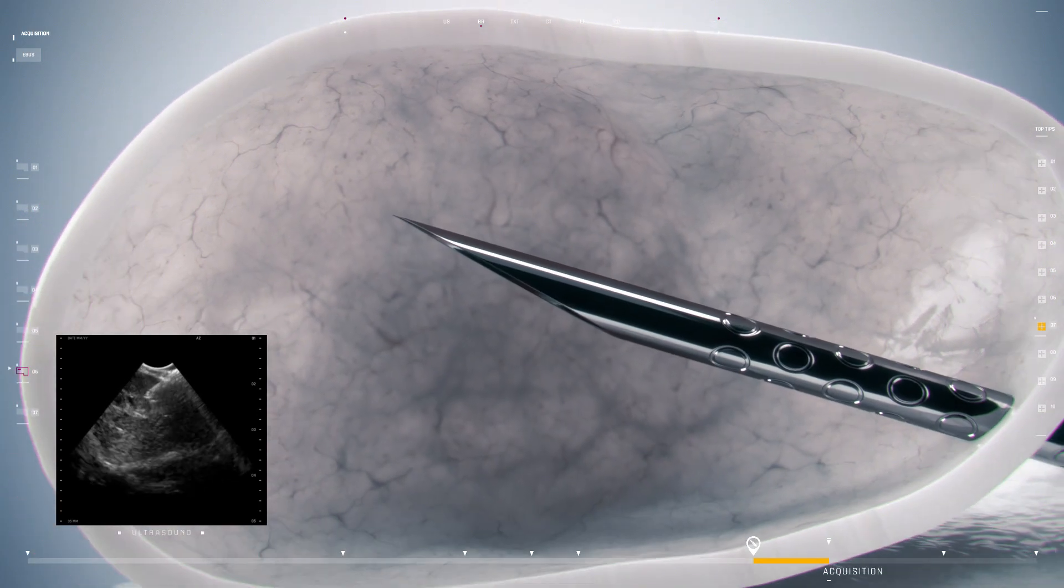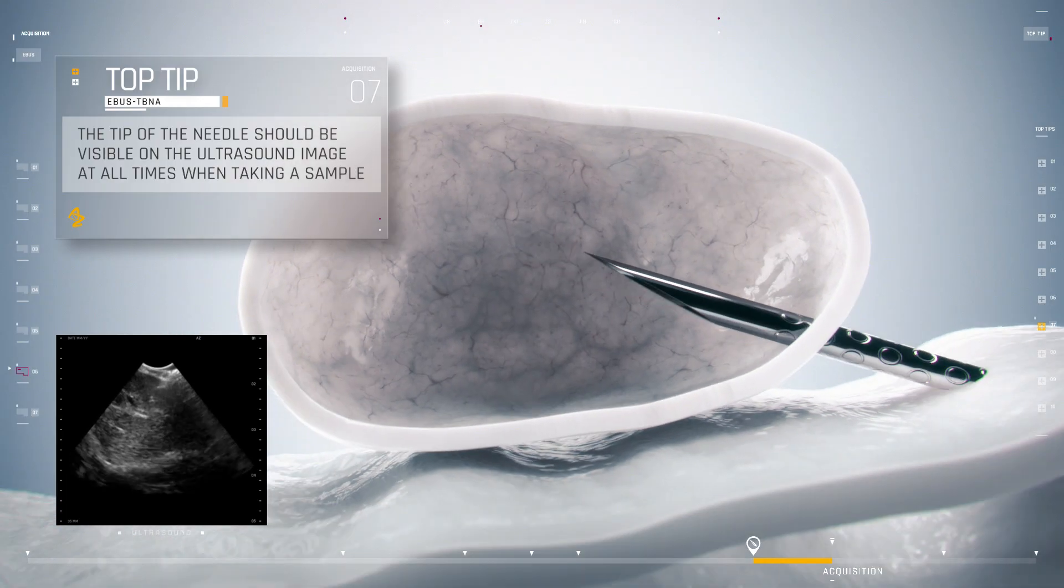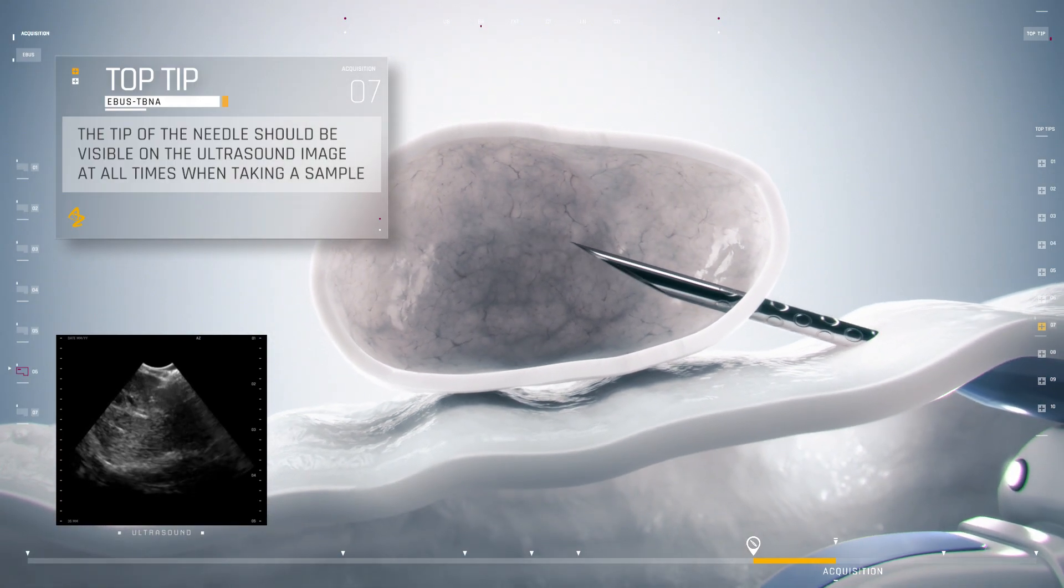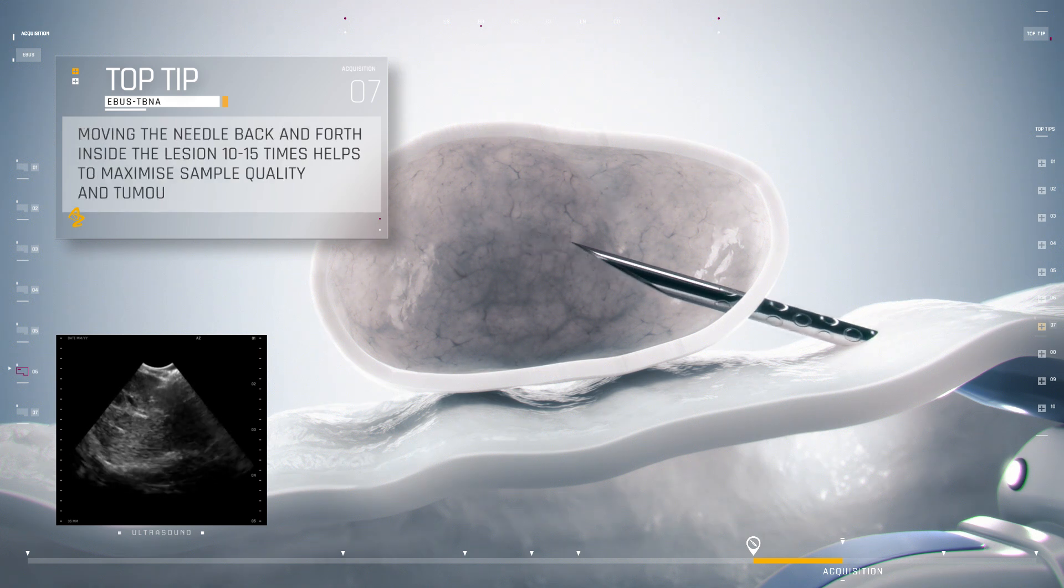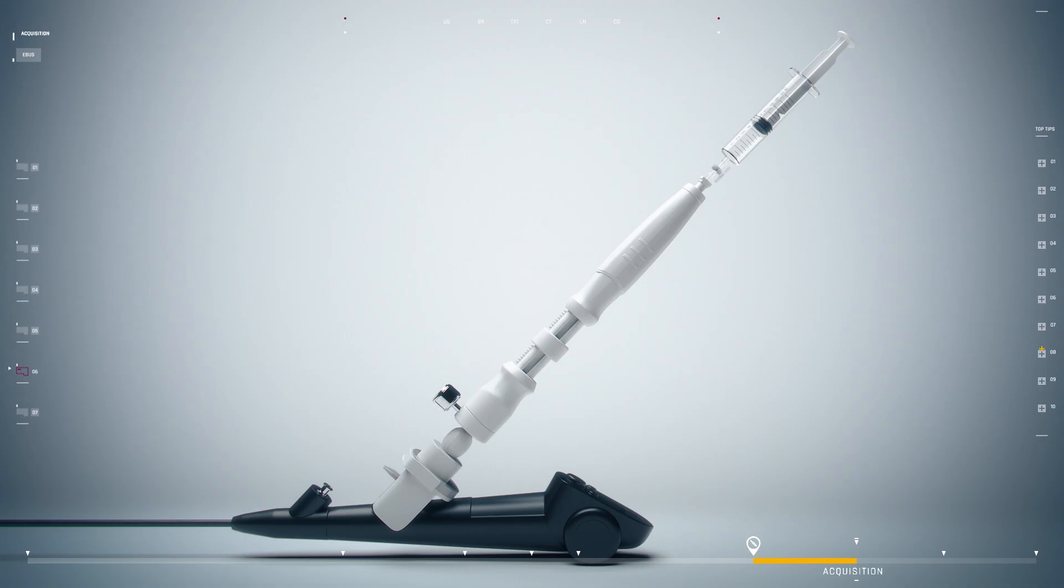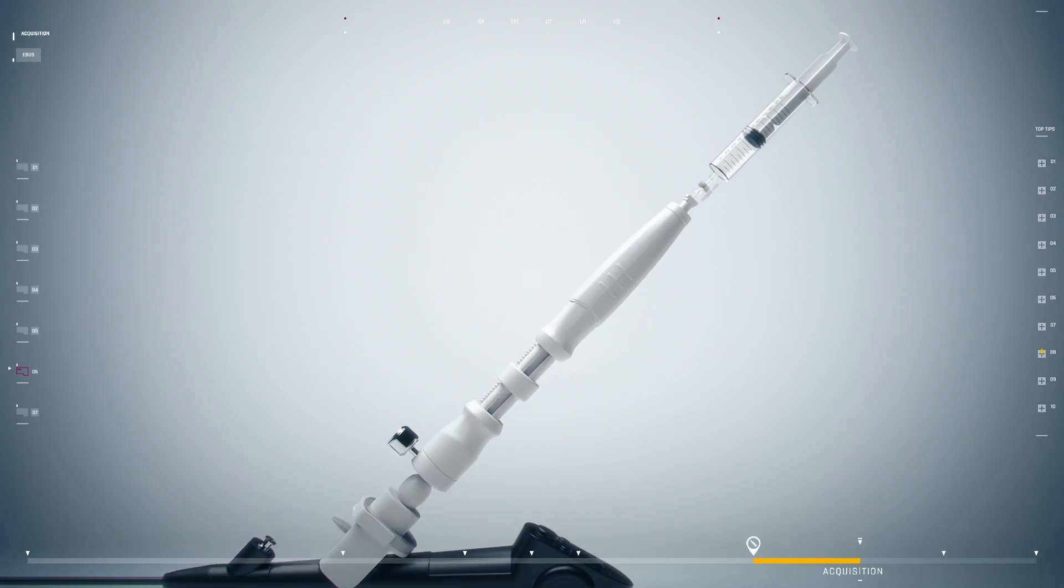Sample collection is performed by moving the needle within the target lesion while suction is applied via a syringe attached to the proximal end of the needle. When taking a sample, the needle should be moved back and forth for 20 to 30 seconds or 10 to 15 times.